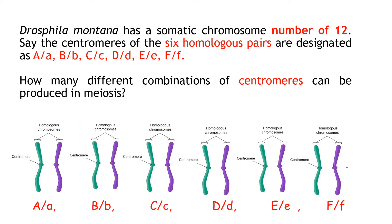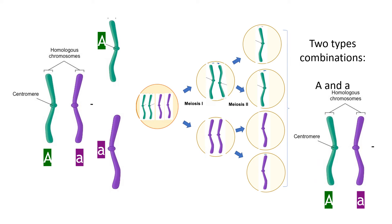When you start having heterozygous genes, you get more variation. Let's look at what happens when all six are heterozygous, starting with just one gene — one centromere. You have one type and the other type going through meiosis, producing four gametes. Here you get two types of centromeres: one will be the capital letter and the other lowercase. When you repeat this six times, you get much more variation.